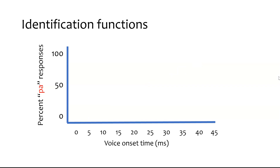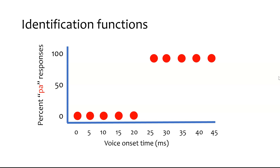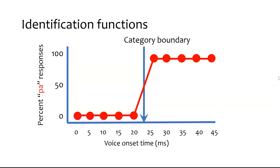When we play zero milliseconds VOT, we get zero percent PA responses. And at the other end we get the opposite. But at five milliseconds VOT, we still get zero percent. Ten milliseconds, still zero percent. Fifteen, twenty — we're never calling it a P sound. And then suddenly at 25 milliseconds, our perception jumps way up to 100% PA, and it stays there for the rest of the continuum. Drawing this function, it looks more like a staircase rather than a straight diagonal line. So we say our category boundary lies somewhere between 20 and 25 milliseconds.